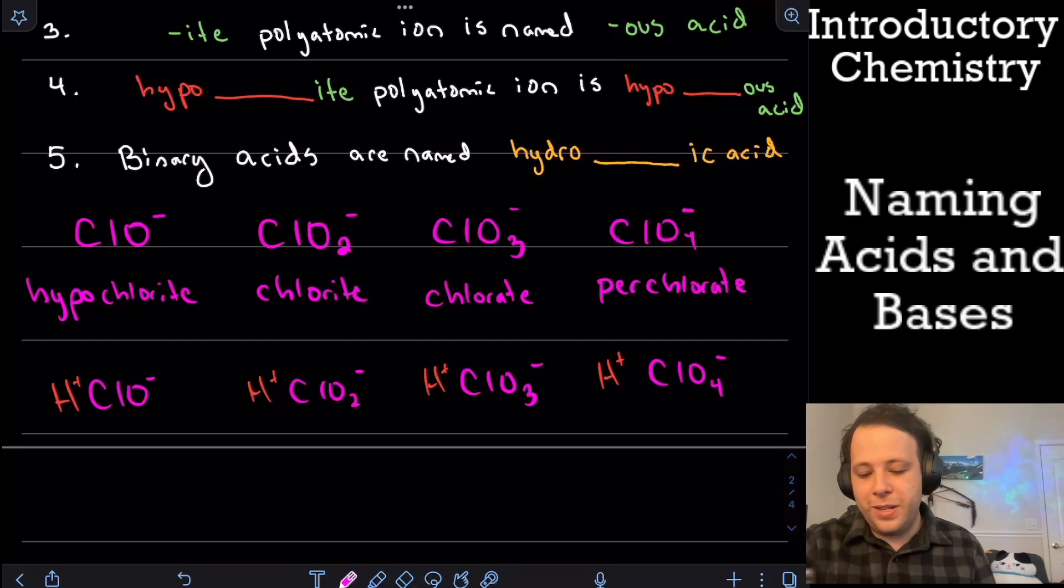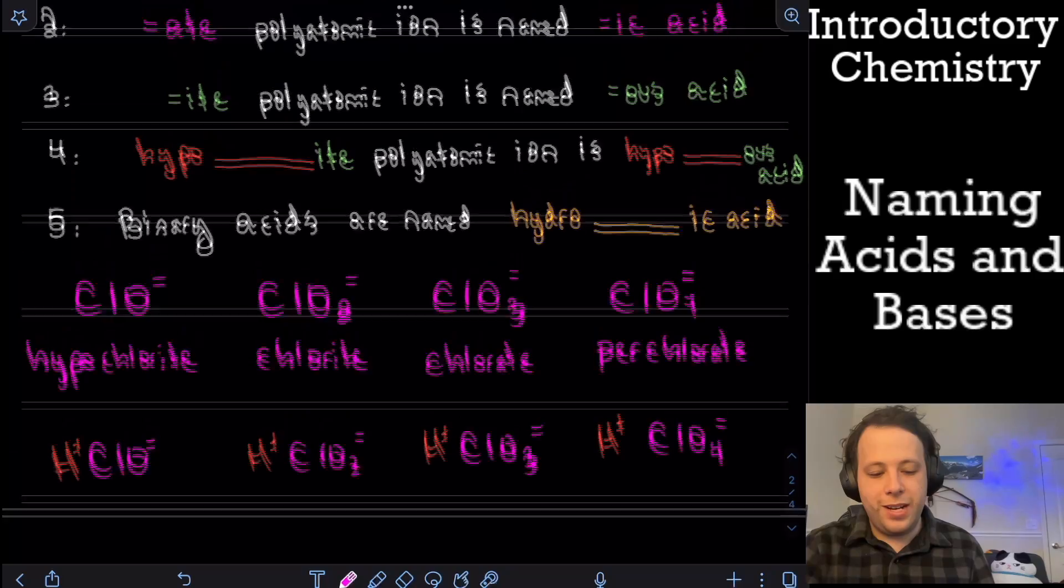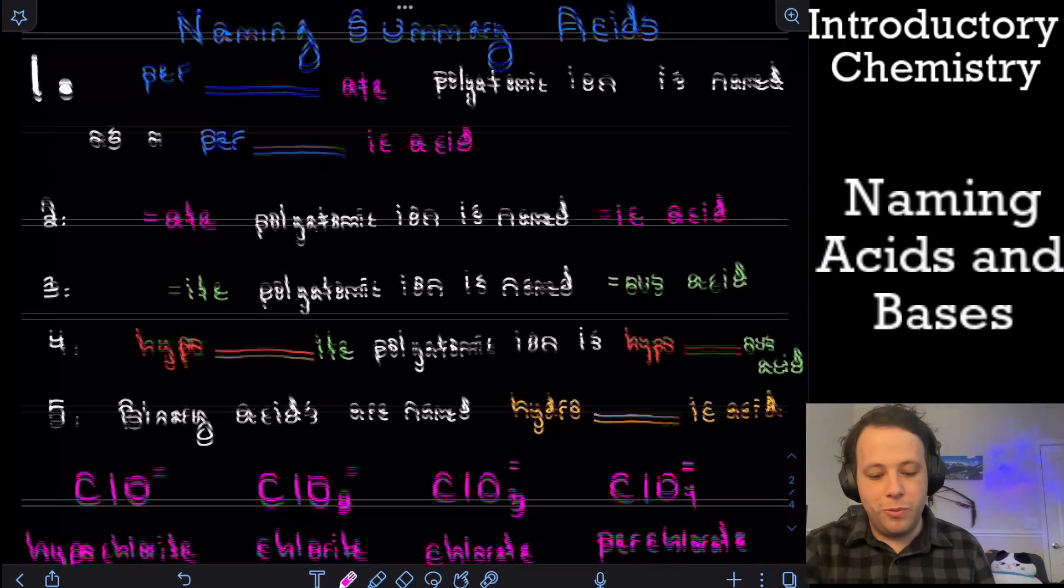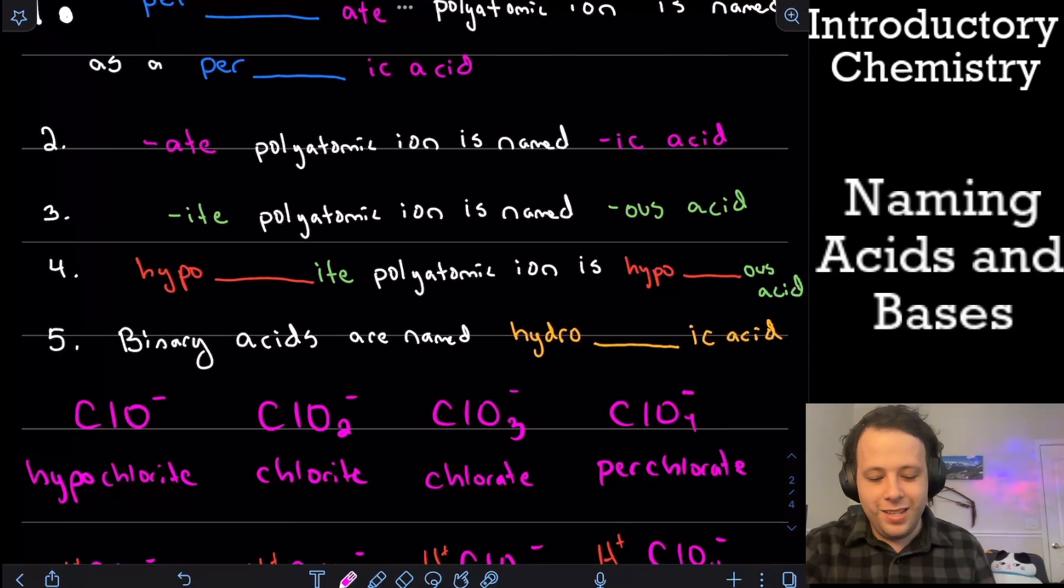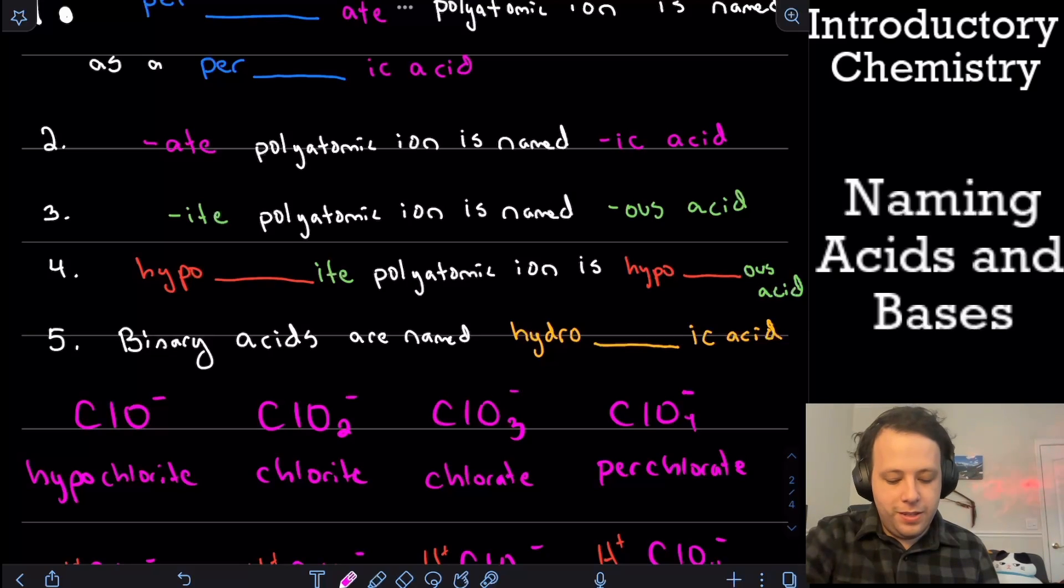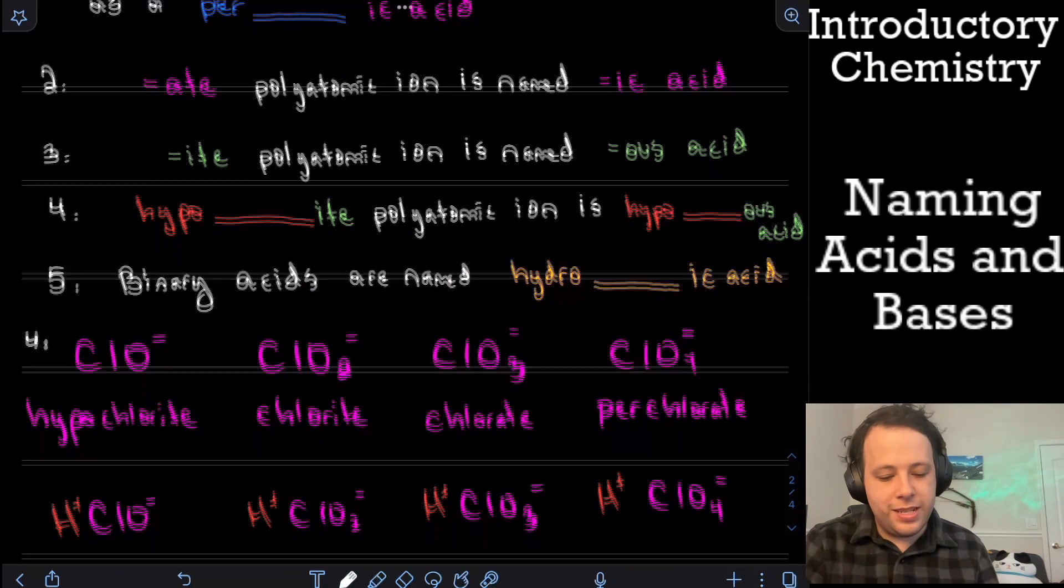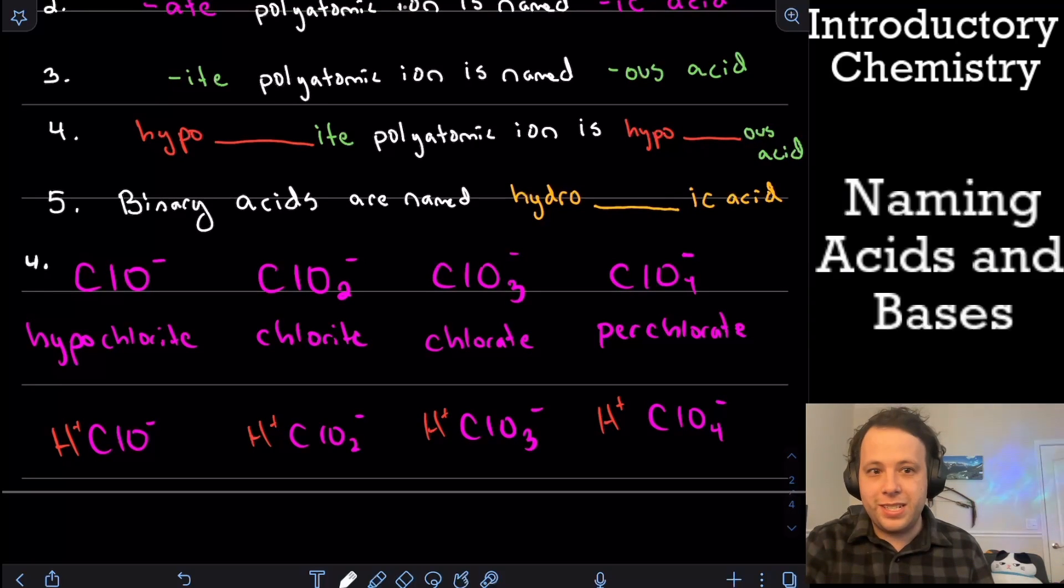Now, how do we go about naming them? Well, if we have a hypochlorite, that was rule number four here. So in order to do rule number four, what that says is we keep the prefix. So it's going to be hypo. Then being that it's, we're talking about, it's a chlorite. So it's going to become hypochlorous acid.